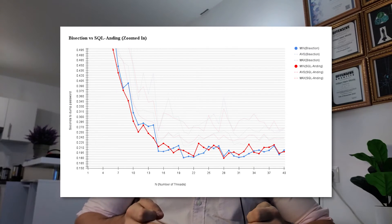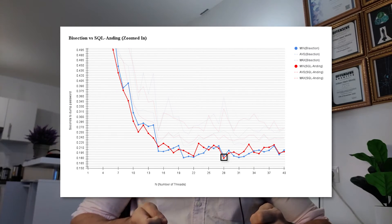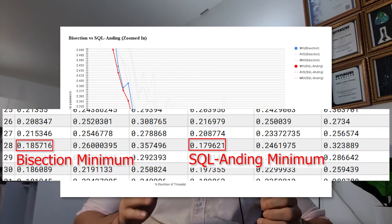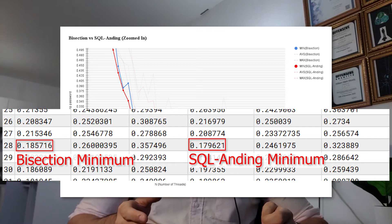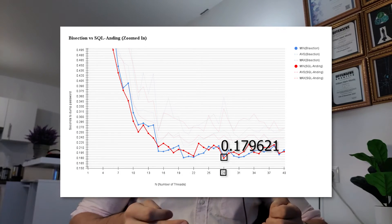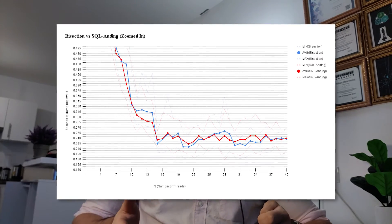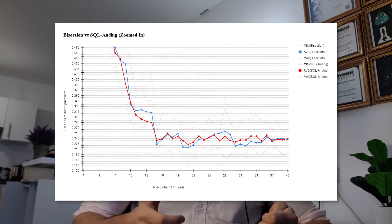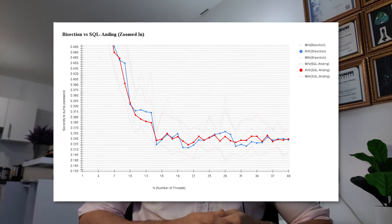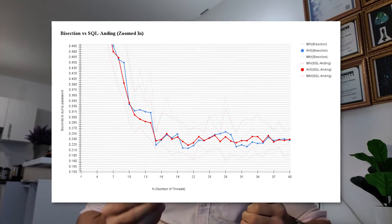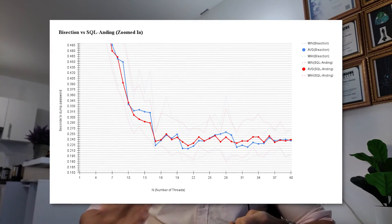Zooming in a little bit, we can see that the all-time minimum belongs to SQL anding at 0.179621 seconds using 28 threads. However, this is only barely, and I mean, 0.006 seconds faster than bisection for the same pool size. Looking at the average times per pool size, we notice that bisection seems to run faster than SQL anding more often than not, and even when it's slower, it's only by a couple hundredths of a second. This certainly came as a surprise to me, as the paper by Ruben claimed SQL anding was over two and a half times faster than bisection, and in theory it would make sense since it could be fully parallelized and the bisection algorithm cannot.